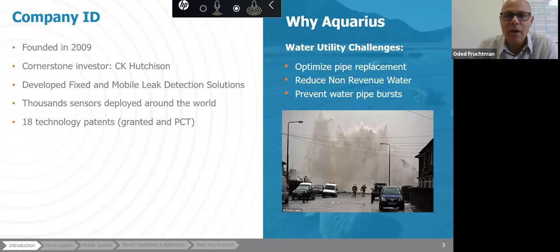A few words about Aquarius. Aquarius was founded back in 2009. It's owned by Hutchison. And we developed fixed and mobile acoustic sensor solutions to help water utilities reduce their non-revenue water, prevent water pipe bursts, and optimize their pipe replacement. We already deployed thousands of sensors around the world and we've got about 18 technology patents in various stages.